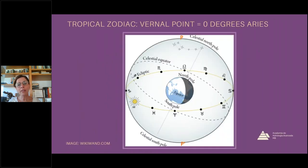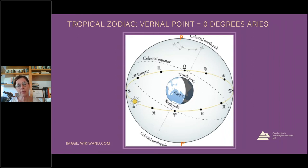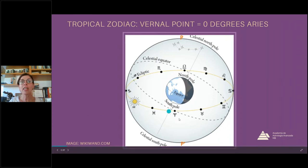In this case, you can see how the tropical zodiac has zero degrees of Aries as its starting point. Here we have the ecliptic and the celestial equator, and at this intersection point, this is where the zodiac begins.